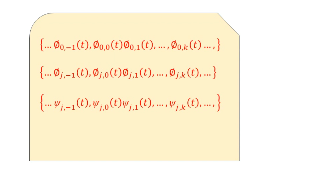For the representation of the Haar wavelet function, the normalization factor 2^(j/2) is included as a multiplicant. So the general form is: psi_{j,k}(t) = 2^(j/2) · psi(2^j · t − k), where psi denotes the Haar wavelet function.